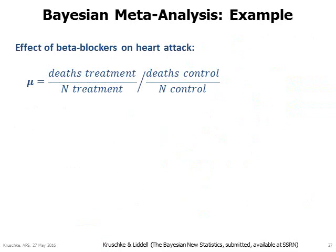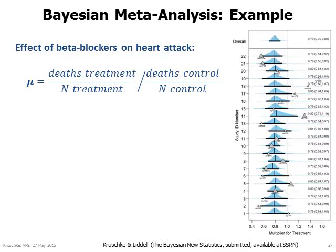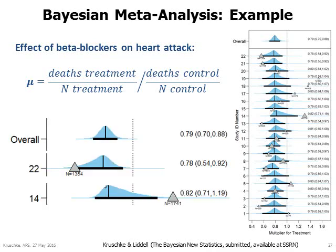As an example, consider the effect of beta-blockers on the frequency of death after heart attack. In 22 trials, heart attack patients were randomly assigned to beta-blocker or control groups, and the number of deaths within a period of time was tallied. The relative death rate in the treatment group, denoted by mu, is the main parameter estimated for each trial and overall. This forest plot shows the posterior distribution for the 22 trial-specific mu values and the overall value at top. Zooming in on a few trials reveals shrinkage — for example, trial 14, in which the data actually showed more deaths in the treatment group, but the posterior distribution has a mode near the overall mode with a tail strongly skewed toward the trial data.